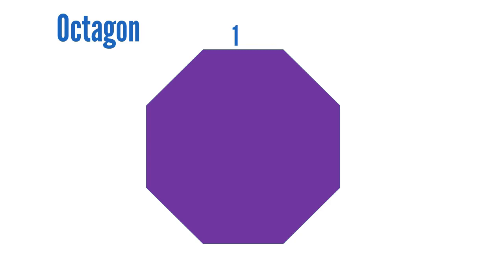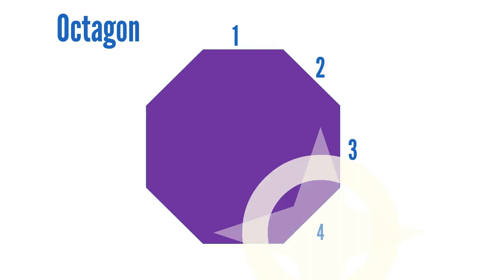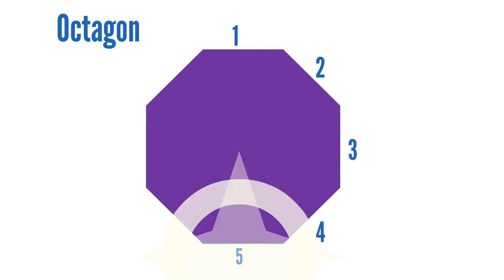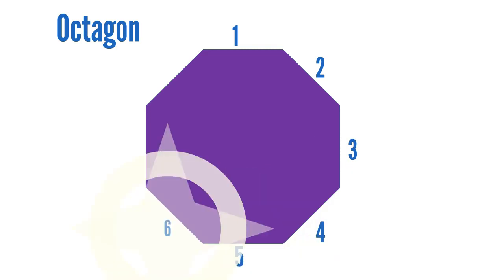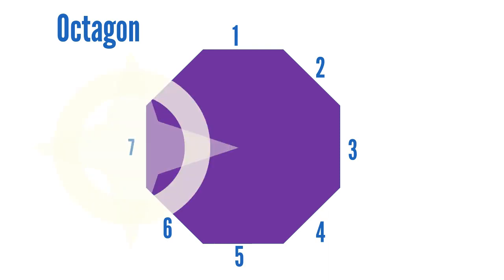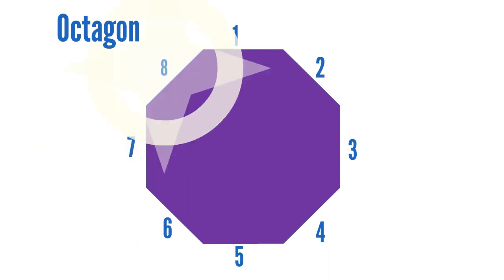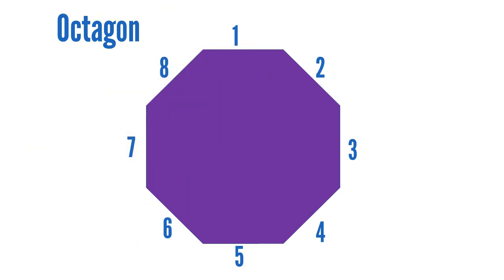Hello, Octagon. How many sides do you have? One, two, three, four, five, six, seven, eight. The Octagon has eight sides.